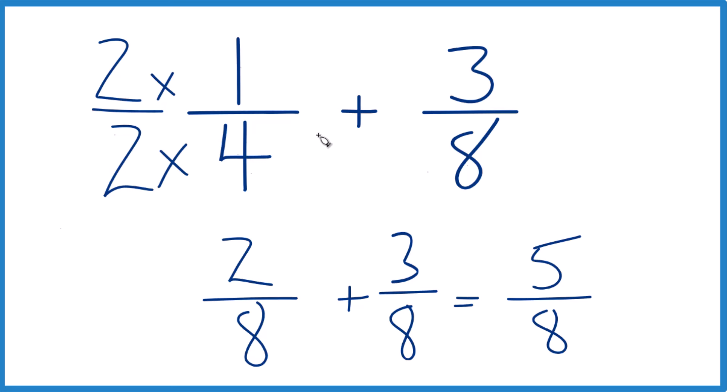So, in answer to our question, 1 4th plus 3 8ths, that equals 5 8ths.